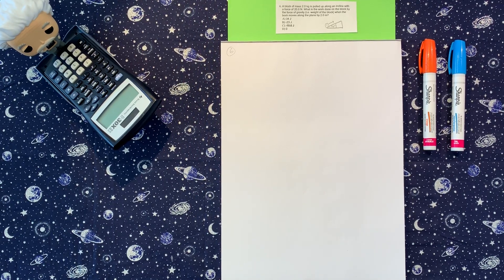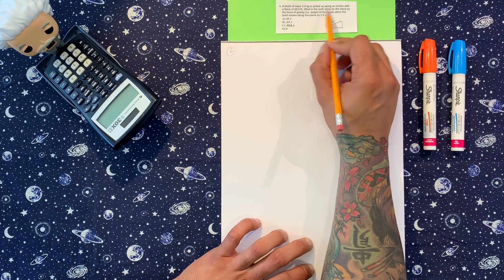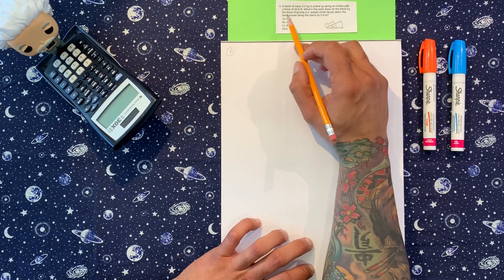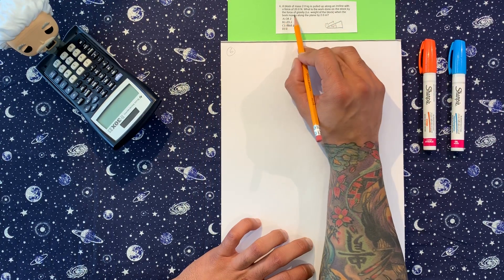All right, moving on. Number six, a block of mass 2 kilograms is pulled up along an incline with a force of 200 newtons. What is the work done on the block by the force of gravity,